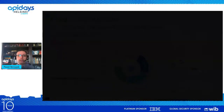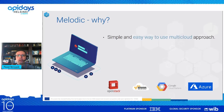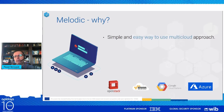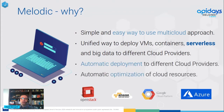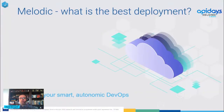Before I go to the API, I'll briefly tell you about MELODIC. The first reason we decided to create this platform is that it is probably the simplest and easiest way to use the multi-cloud approach. It allows for a unified way to deploy virtual machines, containers, serverless, and big data frameworks to different cloud providers, and more services are coming. The deployment is fully automatic, and very uniquely, there is automatic optimization of cloud resources — simply selecting the best cloud provider and the best set of resources.